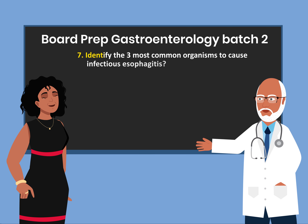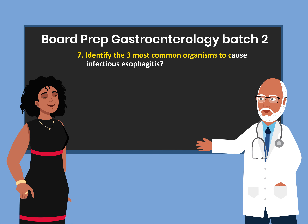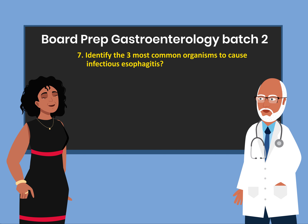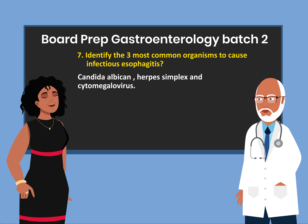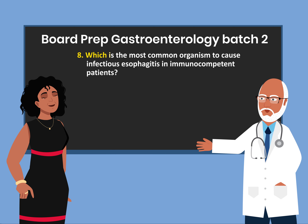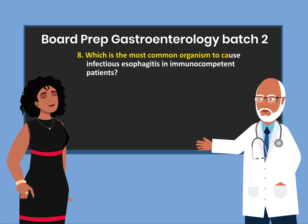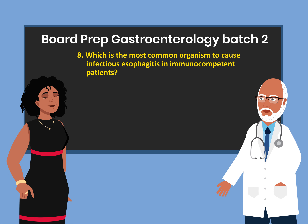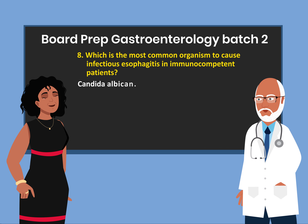Question 7: Identify the three most common organisms to cause infectious esophagitis. Candida albicans, herpes simplex, and cytomegalovirus. Question 8: Which is the most common organism to cause infectious esophagitis in immunocompetent patients? Candida albicans.